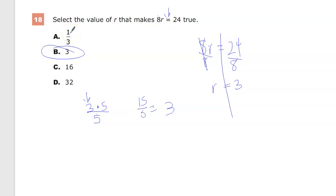8 times 1 third is going to give you 8 thirds, which is 2 and 2 thirds. That's not 24. 8 times 3 is 24. Yeah, good. 8 times 16 is way bigger than 24, and 8 times 32 is obviously bigger than that, so it's bigger than 24 as well.